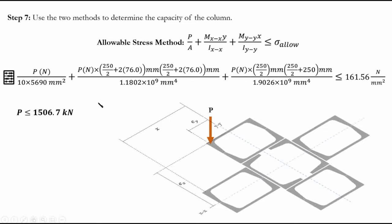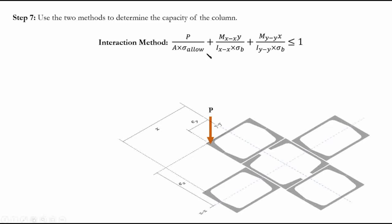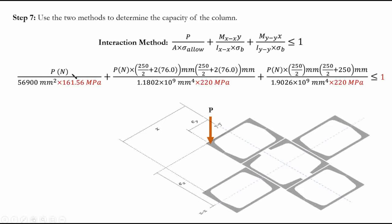For the interaction method, we repeat the process using the interaction formula. The only difference is that flexural stress and axial stress are treated separately: we use 161.56 MPa for axial stress and 220 MPa for bending stress about both axes. In the allowable stress method, sigma allowable was used for everything; here, sigma_b = 220 MPa is used for bending terms. Solving the interaction formula gives P ≤ 1936 kN.